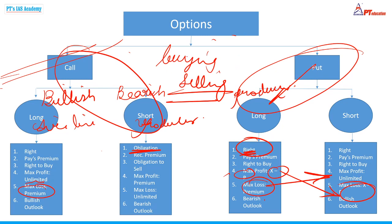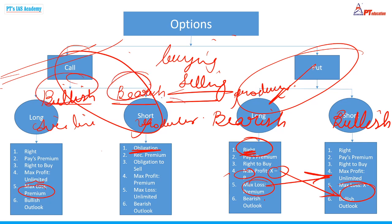So to summarize the four types: long call is bullish, short call is bearish, long put is bearish, and short put is bullish. Remember: bullish, bearish, bearish, bullish.